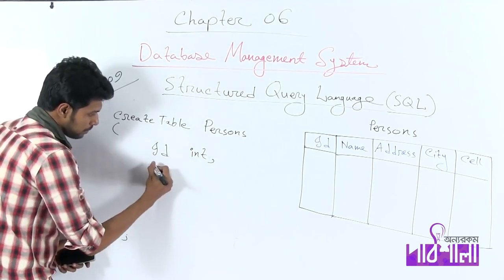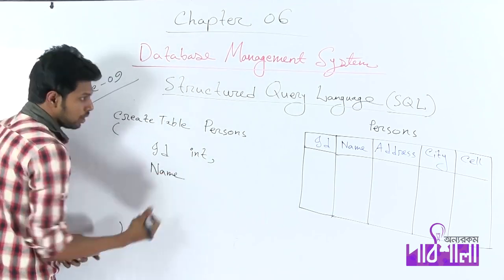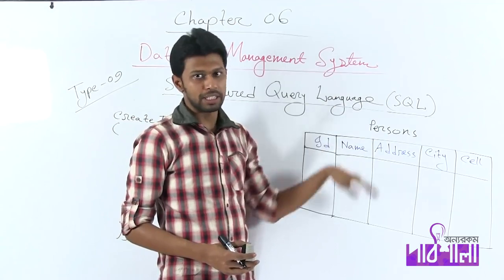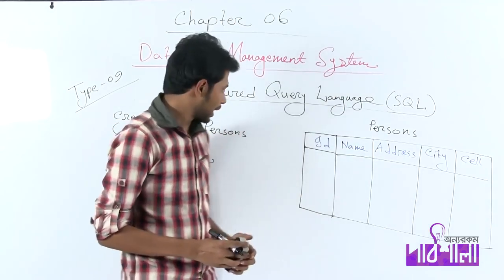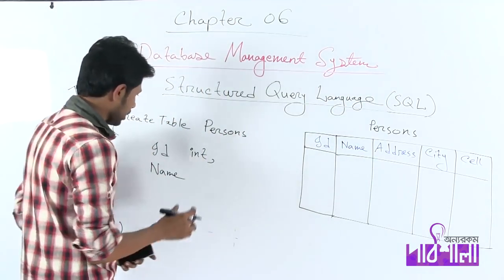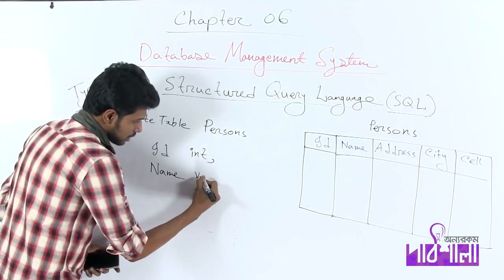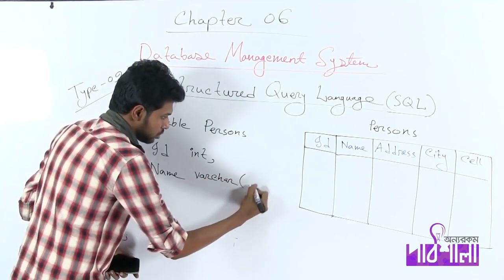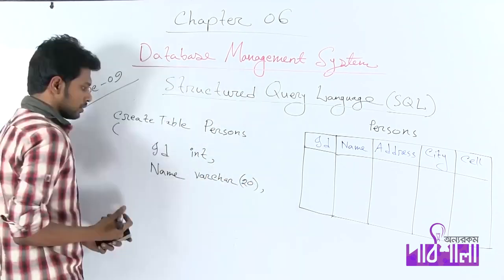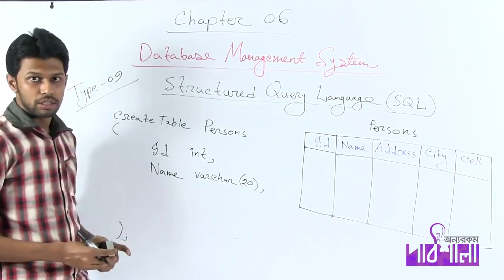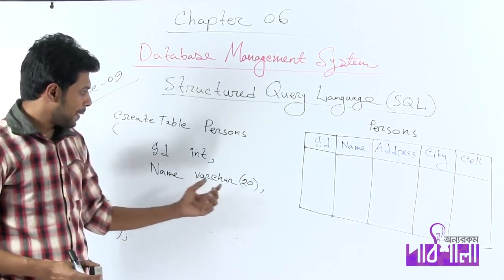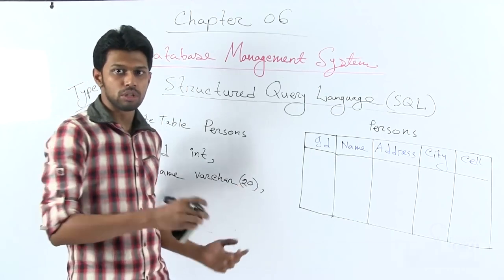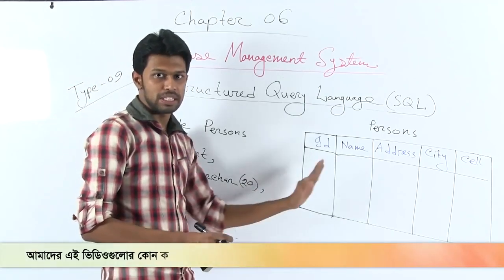The next column name is name. The data type is text. So name is text. The data type — how many characters? You write the same bracket: 20. That means the person's name is maximum 20 letters.